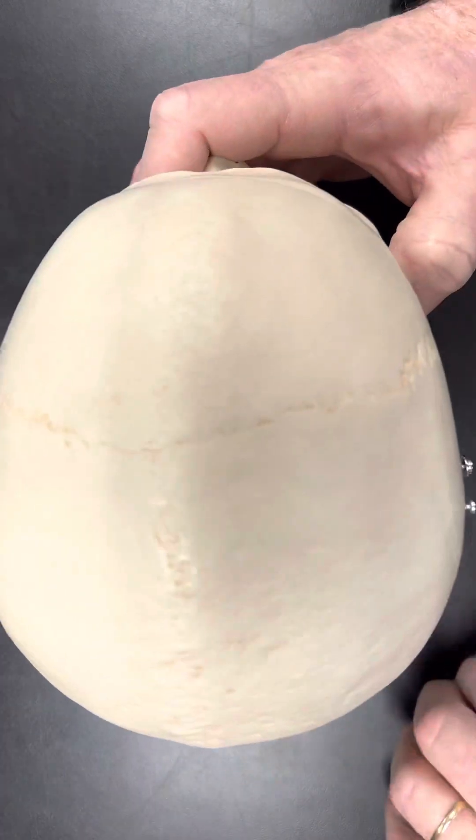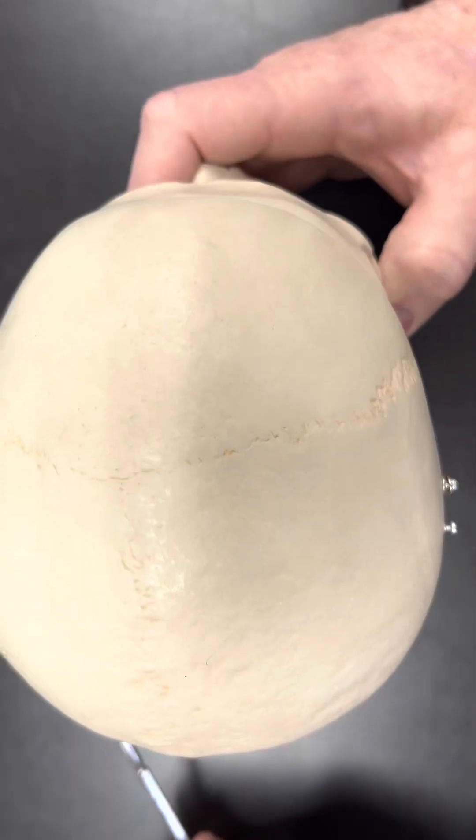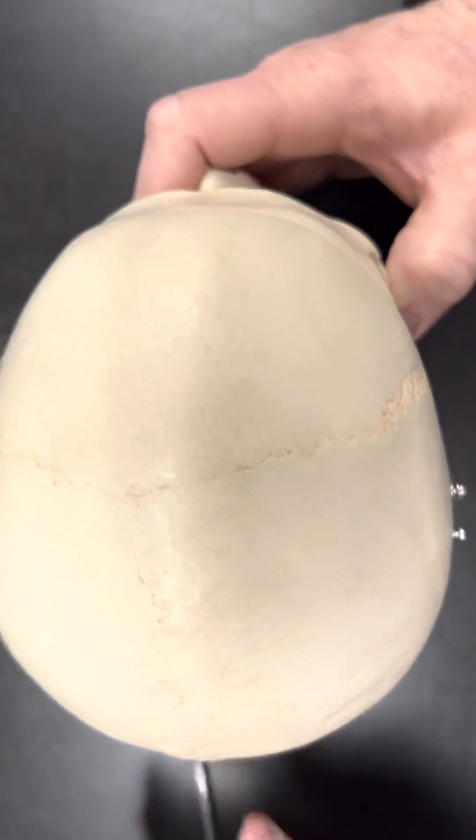But before we get to that, let's go here real quick. These are my parietal bones. This is parietal bone here and here. You have two parietal bones as you can see, and I have the sagittal suture separating those.